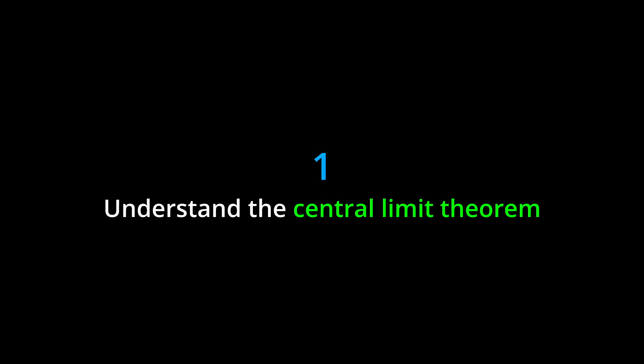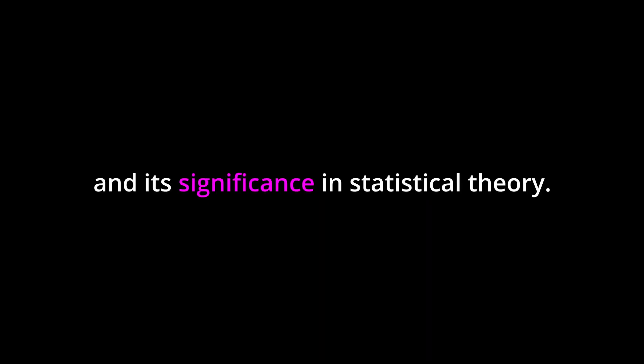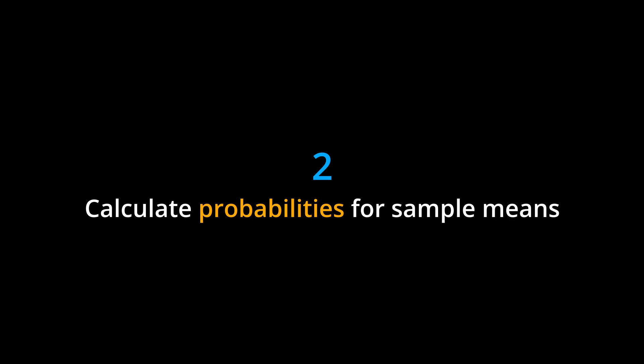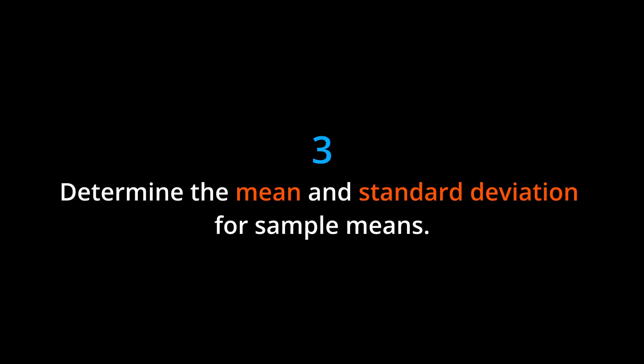Learning Objectives. By the end of this chapter, you should be able to: 1. Understand the central limit theorem and its significance in statistical theory. 2. Calculate probabilities for sample means using the central limit theorem. 3. Determine the mean and standard deviation for sample means.